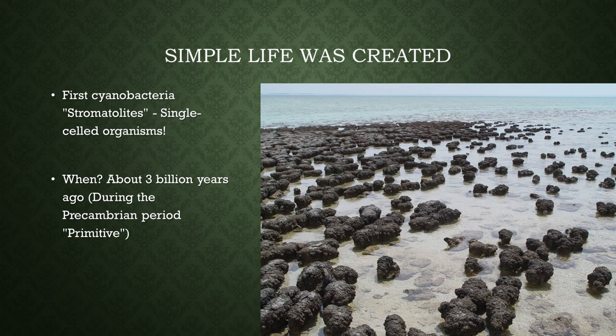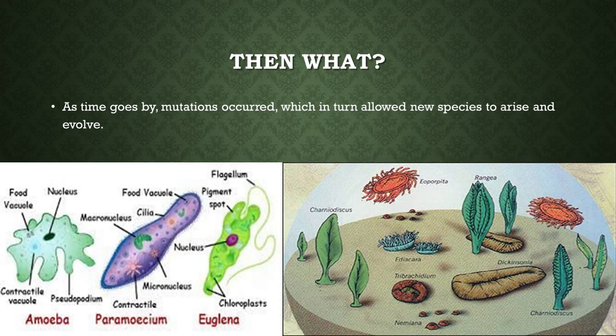And then simple life was created. First we have the stromatolites, which are basically cyanobacteria — single-cell organisms — about 3 billion years ago, during what is also known by historians and archaeologists as the Precambrian period. Then, as time went by, mutations occurred, which in turn allowed new species to arise and evolve.